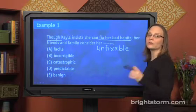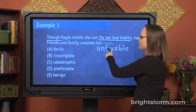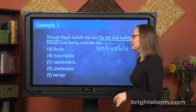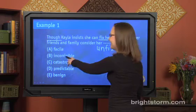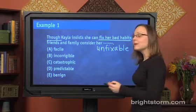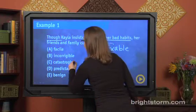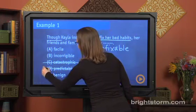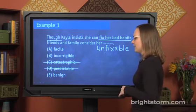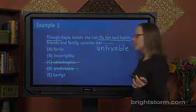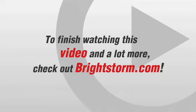Use this as your guide. First, look for clear mismatches to eliminate. We said 'unfixable.' Does unfixable mean 'facile'? That's a hard word, so we'll skip it. Does it mean 'incorrigible'? Also hard, so we keep moving. 'Catastrophic' means really bad or disastrous — that might feel okay, but it doesn't mean unfixable, so we eliminate it. 'Predictable' also doesn't match, so it's out. 'Benign' — maybe you don't know that one, so leave it in. Note that both 'catastrophic' and 'predictable' might kind of make sense in the sentence, but...